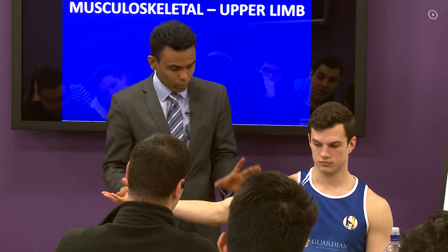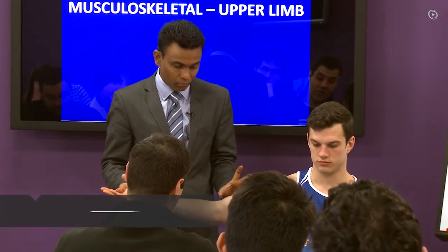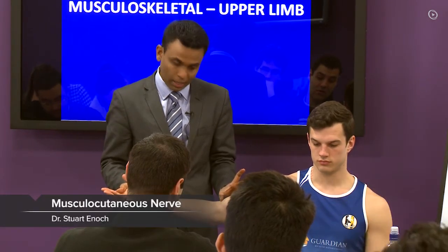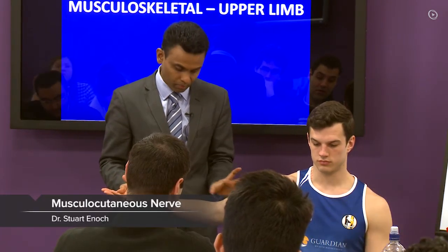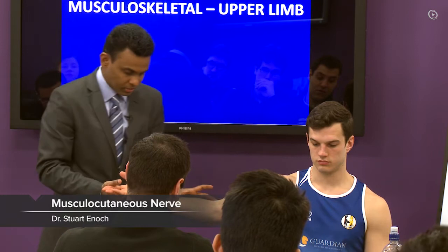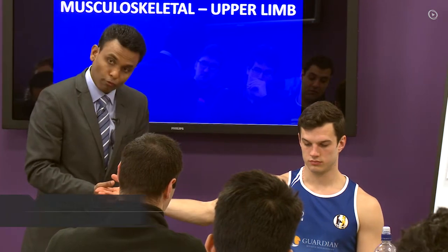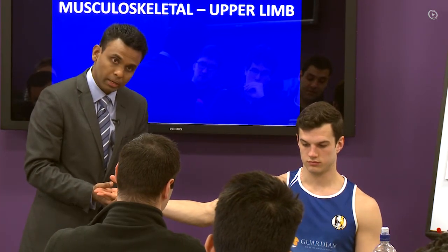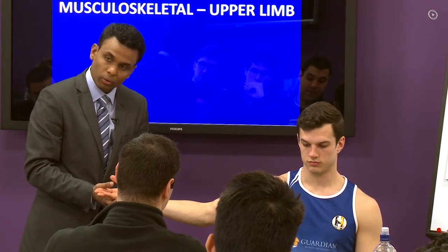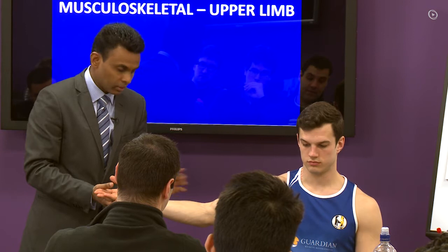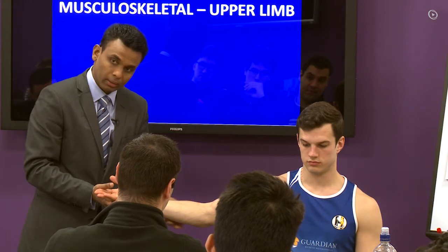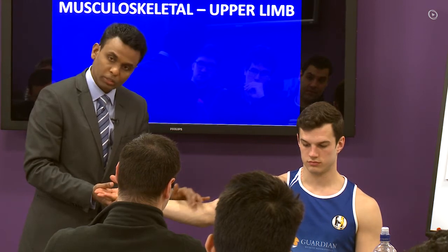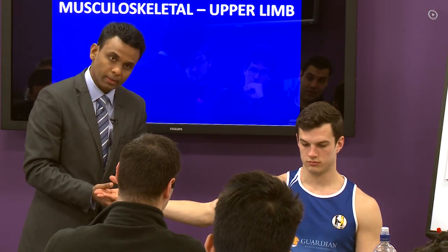If you think about it, you've now covered all of the anterior aspect of the arm and the flexor aspect of the forearm, because it's separated either by the median or the ulnar nerve. Nothing to do with the radial nerve, nothing to do with the musculocutaneous.